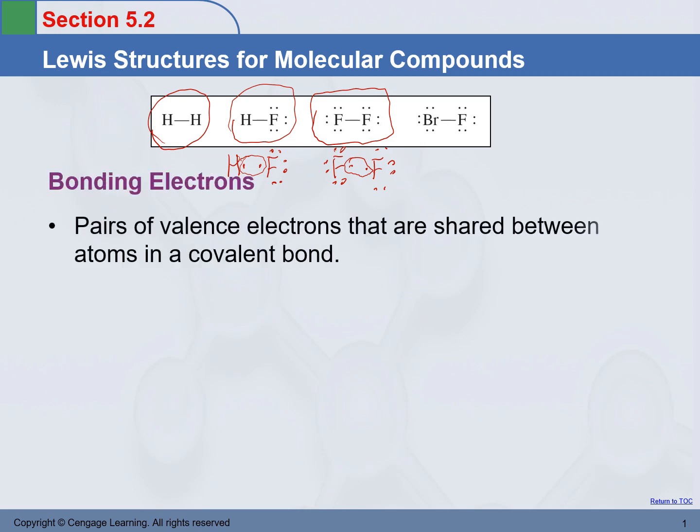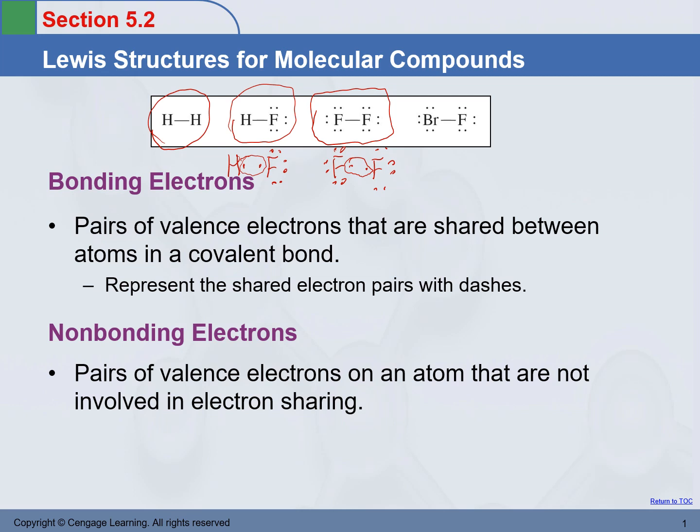The electrons that are shared between atoms are called bonding electrons. The electrons that stay locally within one atom that are not involved in the electron sharing are called non-bonding electrons.